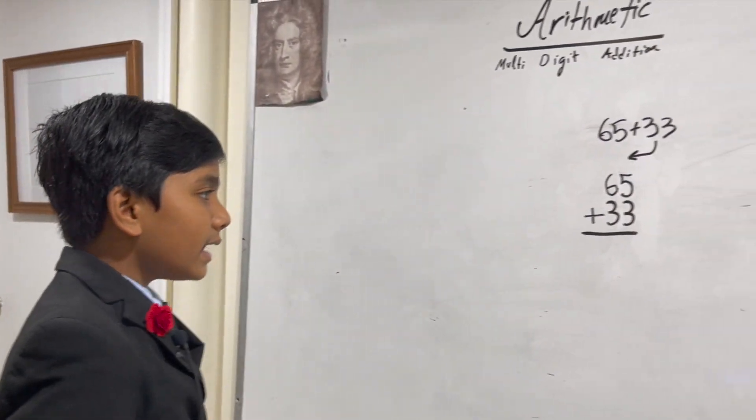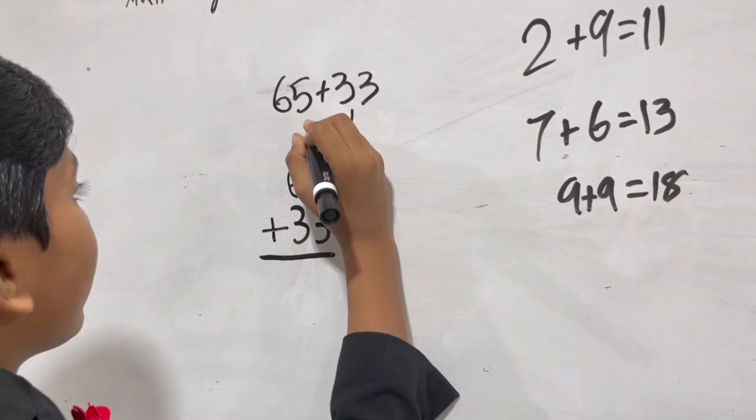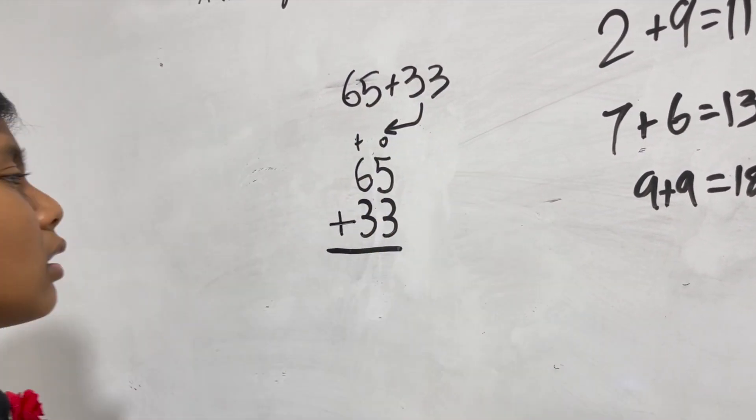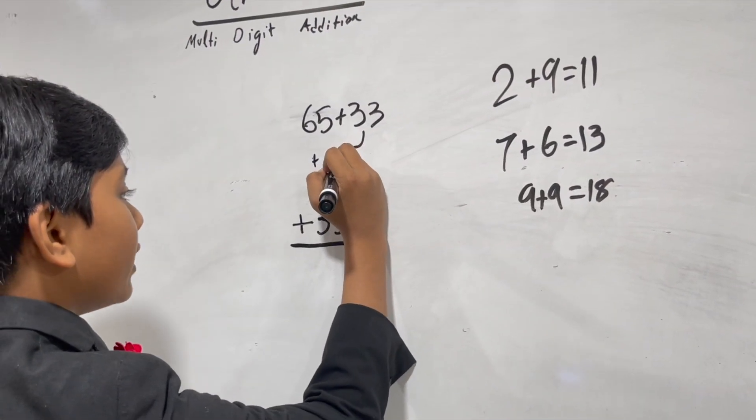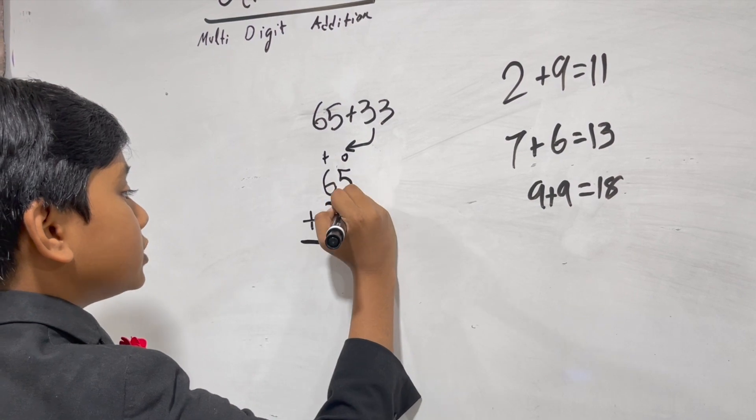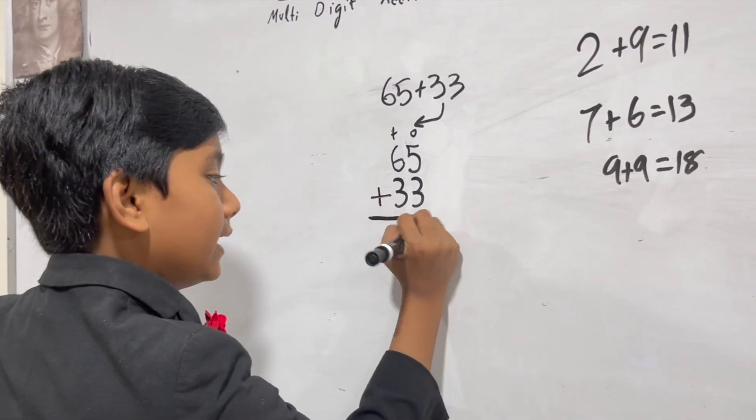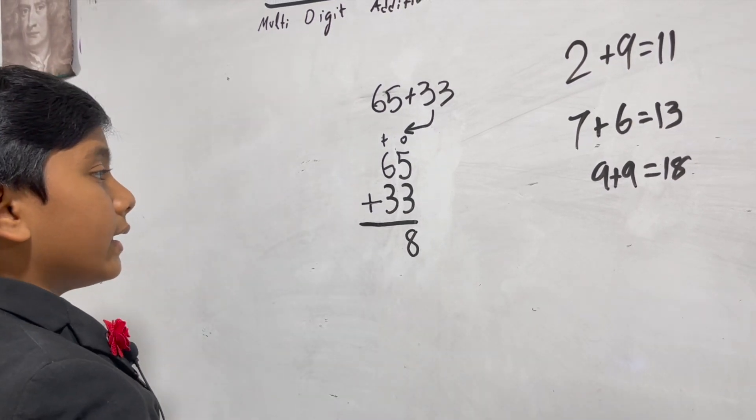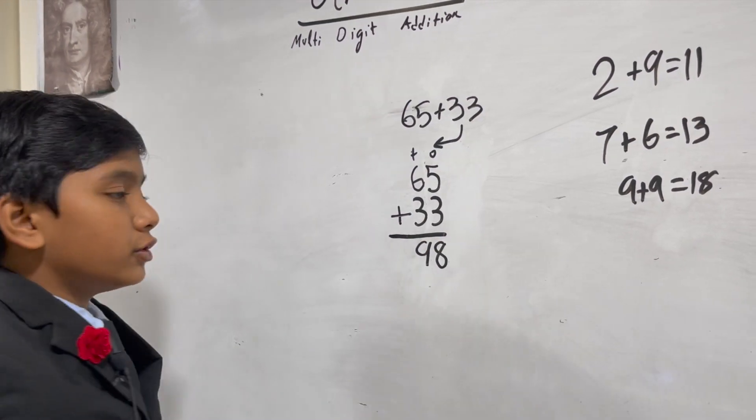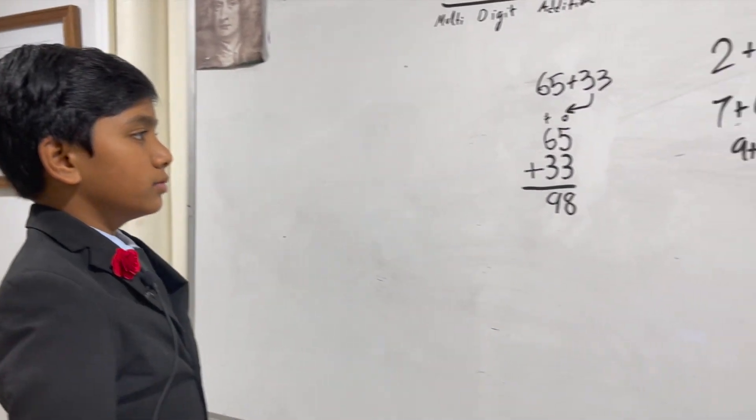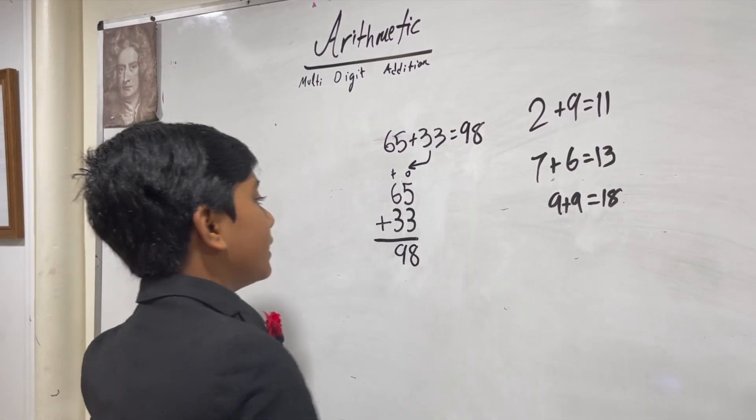Okay, now we're gonna do this column by column or place by place. We have the ones place and the tens place. So in the ones place we have five plus three. Now five plus three is obviously eight. And in the tens place we have six and three. Adding them gives you nine. So boom, 65 and 33 is 98.